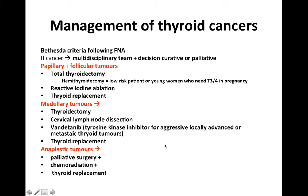Management of thyroid cancer should occur in a multidisciplinary team setting to determine curative versus palliative intent. For papillary and follicular tumours, total thyroidectomy is performed; hemithyroidectomy may be considered for low-risk patients or women requiring thyroxine or triiodothyronine in pregnancy. Radioactive iodine ablation and thyroid hormone replacement are also used. For medullary tumours: thyroidectomy, cervical lymph node dissection, vandetanib (a tyrosine kinase inhibitor) for aggressive or metastatic disease, and thyroid replacement. For anaplastic tumours, due to poor prognosis, management is mostly palliative: surgery, chemoradiation, and thyroid replacement.